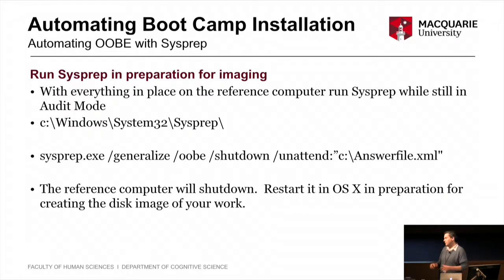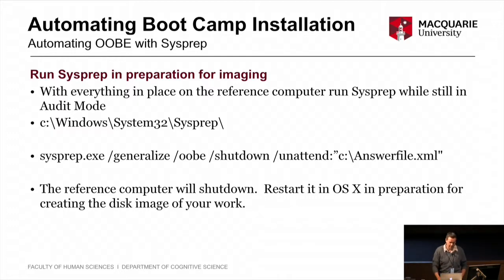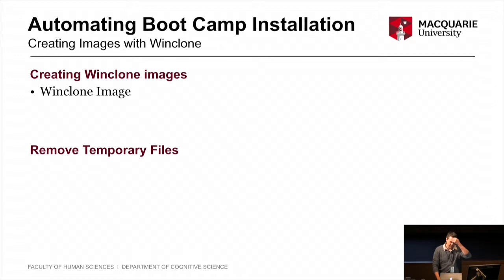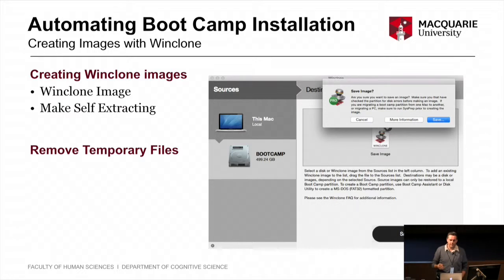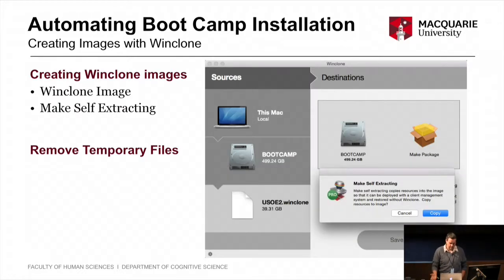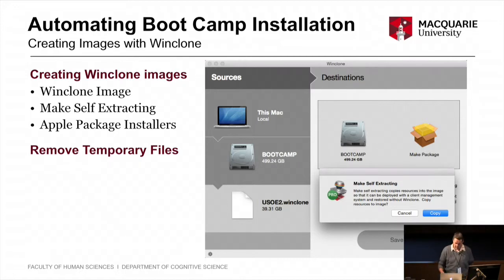Now your image is ready. We've always used WinClone, and this is the new version. You can create basic WinClone images, but those require WinClone to restore and it's a manual process. You can convert them into self-extracting images where you just double-click to install. But what we really want is Apple package installers, which you can also create from WinClone's interface. If you've got a package installer, you can do a lot with it — deployment tools like Munki, Casper, or DeployStudio can query the receipts database using the package identifier to check if Windows has already been deployed and at what version.